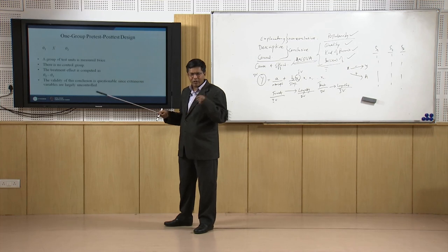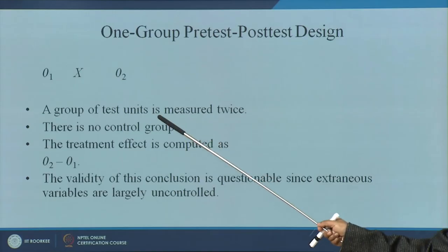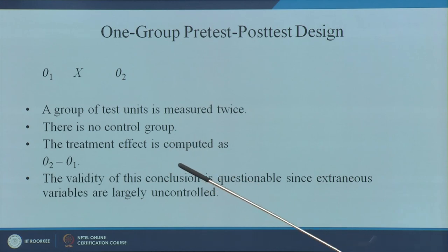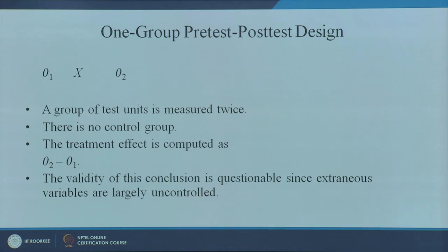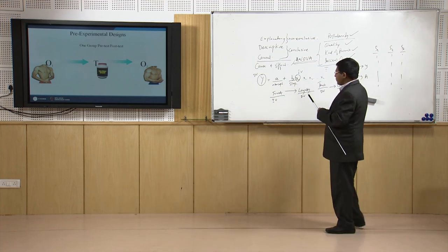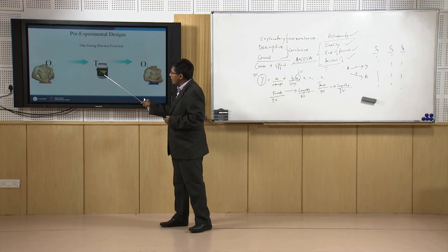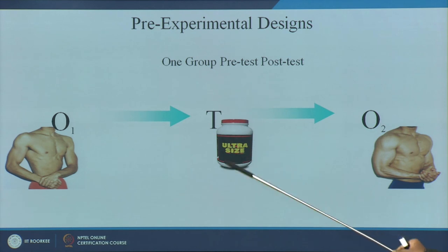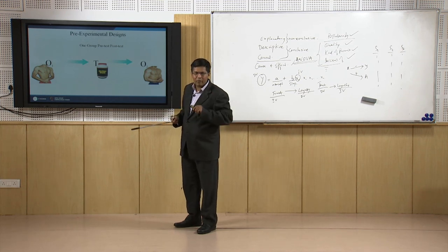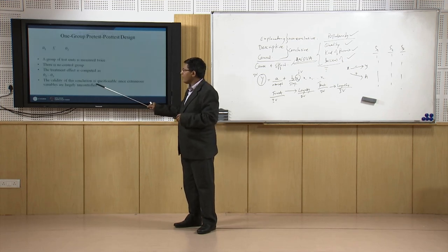The second is the one-group pre-test post-test design. The limitation of the earlier design was no pre-test, so now we have introduced a pre-test. Twice it is measured, and there is no control group — only one treatment group. The treatment effect is computed as O2 minus O1. However, the validity of the conclusion is questionable since extraneous variables are largely uncontrolled. How can we say it is only because of the protein? The person may have changed sleeping habits or started doing something else.